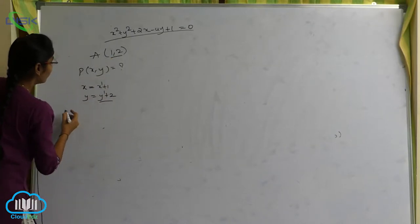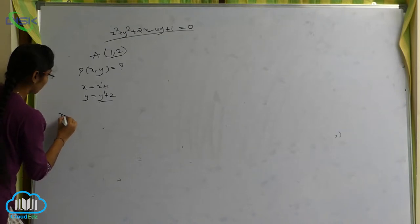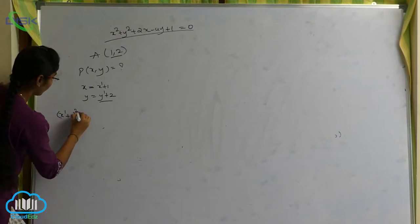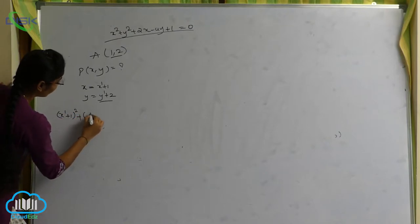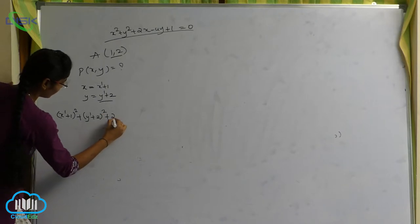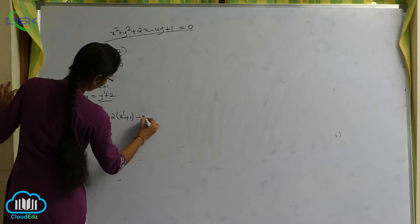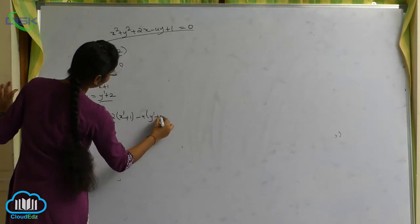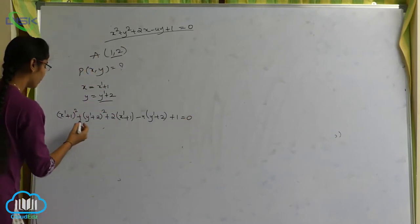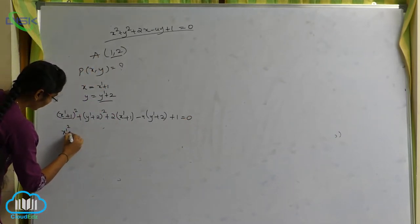Substituting these values: (x dash plus 1) whole square plus (y dash plus 2) whole square plus 2 into (x dash plus 1) minus 4 into (y dash plus 2) plus 1 is equals to 0. Using the (a plus b) whole square formula: a squared plus b squared plus 2ab.